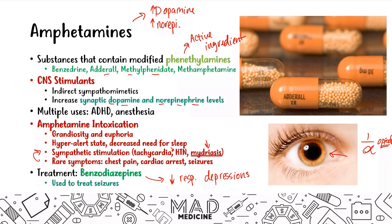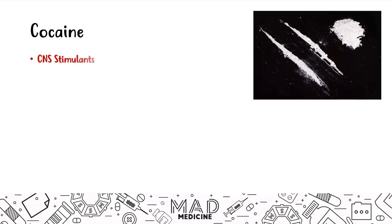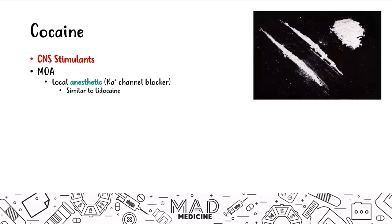The next topic is cocaine — one hell of a drug. It is a CNS stimulant with two main mechanisms of action. First, cocaine acts as a local anesthetic by blocking the sodium channels on our nerves. Cocaine functions very similar to lidocaine — you can tell because they share the suffix '-caine.' Both block sodium channels in our nerves, causing nerve firing to become delayed and slower.